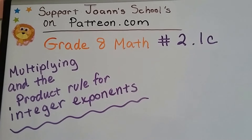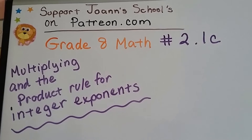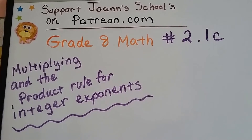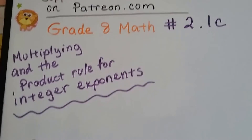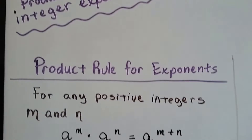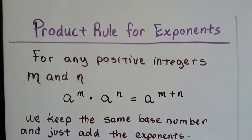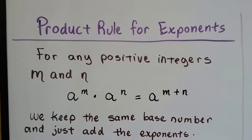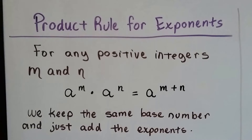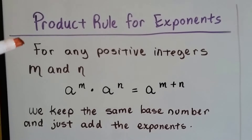Grade 8 math, number 2.1c: multiplying and the product rule for integer exponents. The product rule for exponents — it's called the product rule because the answer in multiplication is a product. This is for multiplying with exponents.